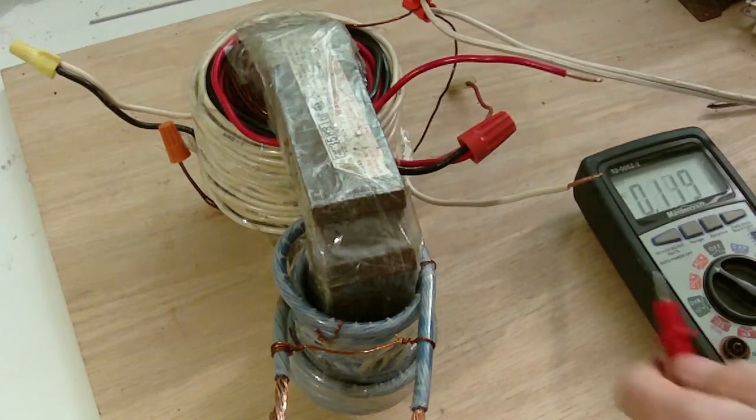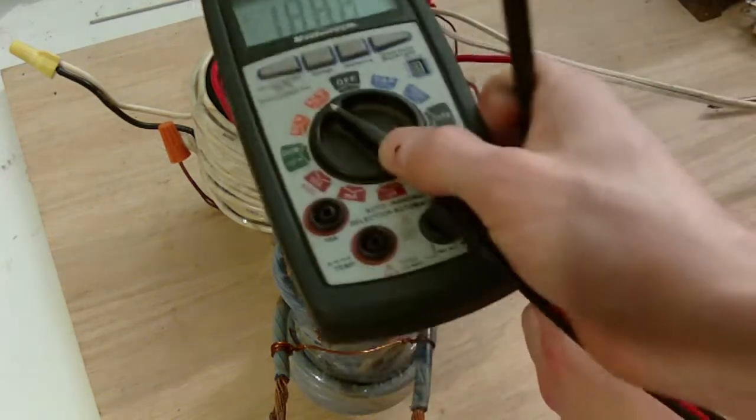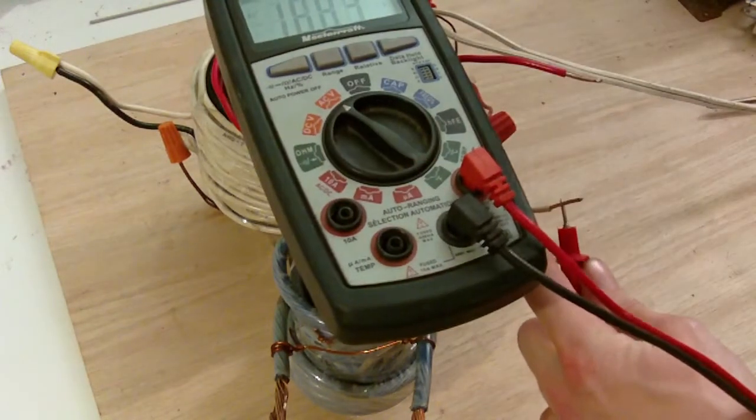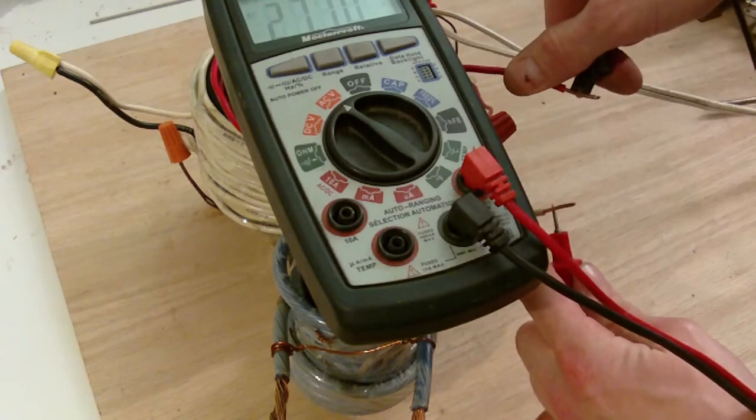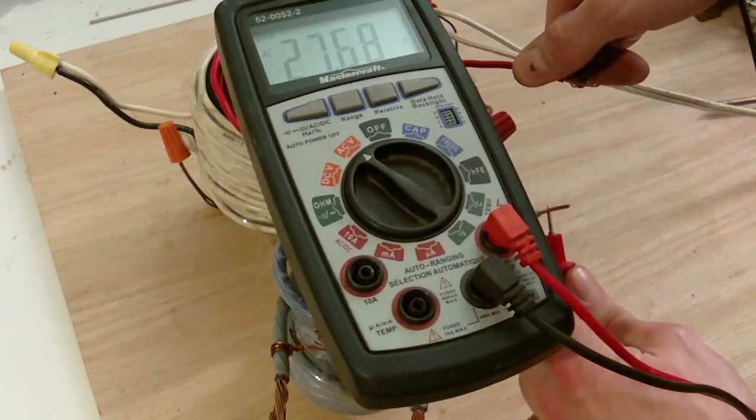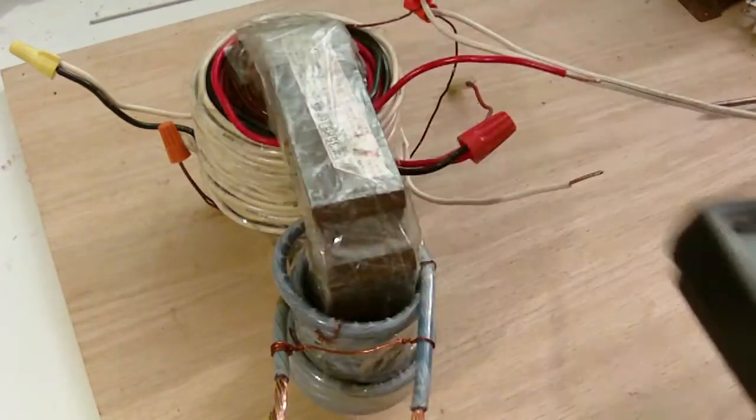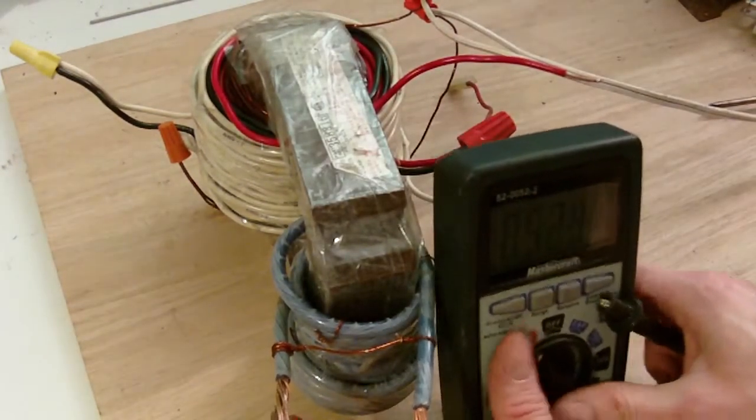On the secondary here, 27 volts, you can see that. And across this smaller coil, 3.2 volts.